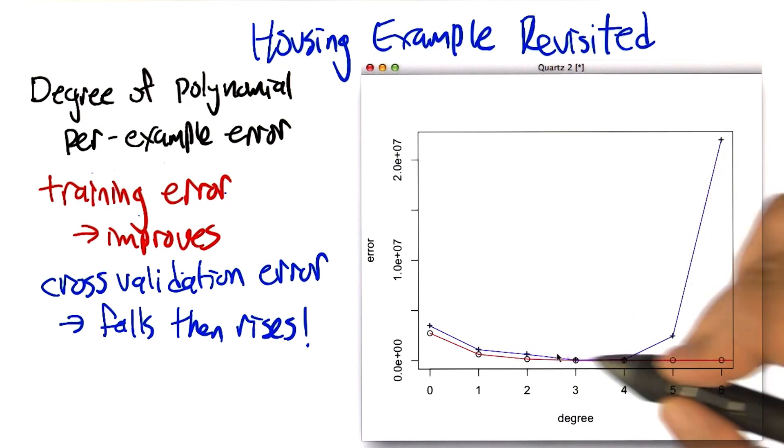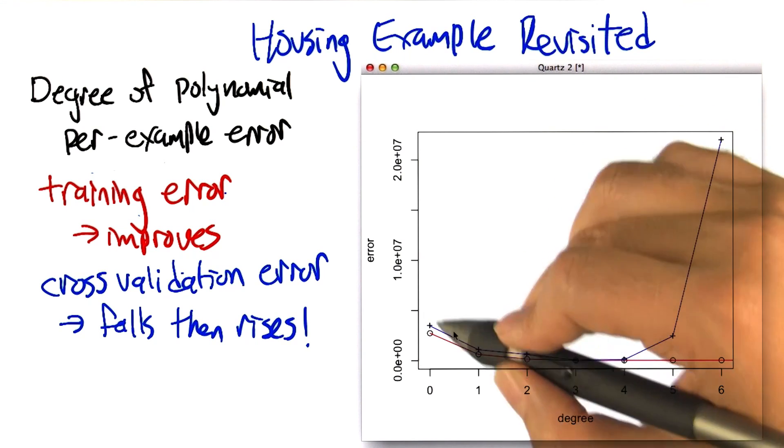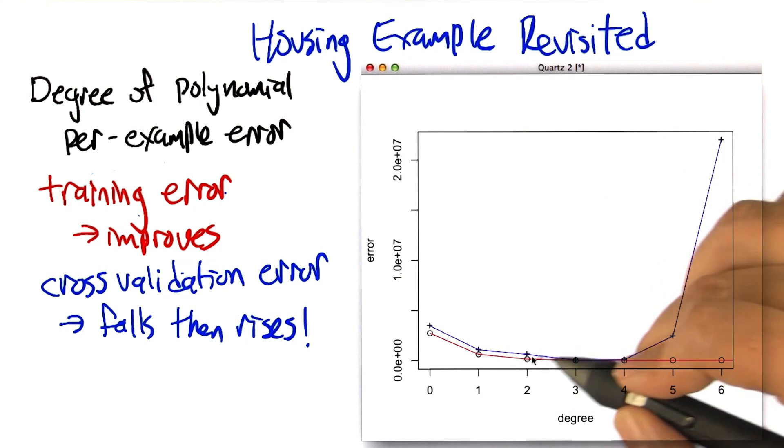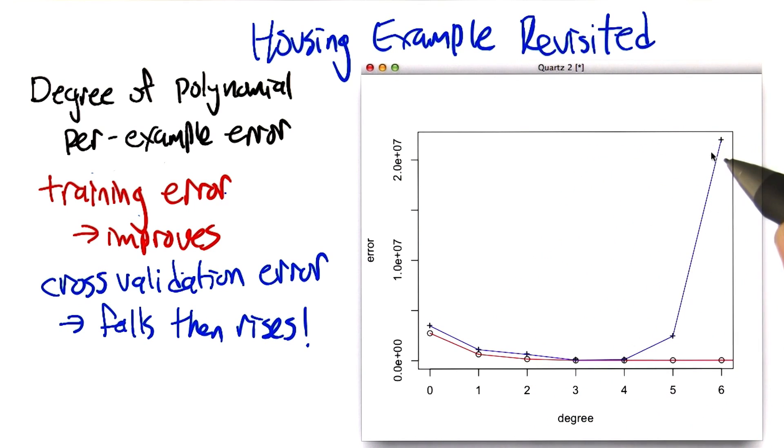And this is beautiful—this inverted U is exactly what you tend to see in these kinds of cases, that the error decreases as you have more power and then it starts to increase as you use too much of that power. Does that make sense to you?